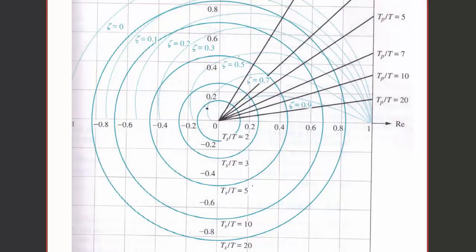So here we have another design chart. This one has constant damping ratio, constant settling time, and constant time to peak. If we design this once again so that zeta equals 0.7, that's this curve here, and we want it to have tp over t equal 15.